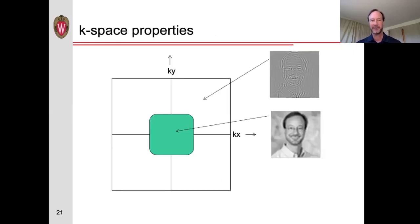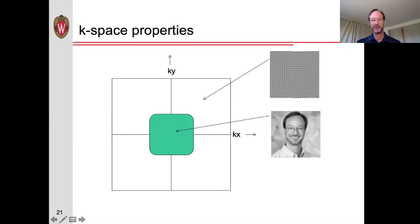A few properties of k-space are important to understand. Since k-space represents spatial frequencies, if we only acquire the center of k-space — just the lowest frequencies — we get a slightly blurrier image. Just cropping the center of k-space and reconstructing with a Fourier transform gives a blurry picture. Conversely, if we remove the center and take a Fourier transform of just the periphery of k-space, we get a lot of edge information. In general, edge information is at the higher spatial frequencies, while the main contrast comes from the lower parts of k-space.